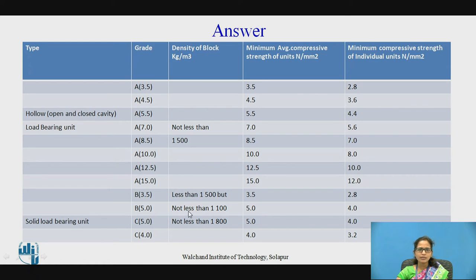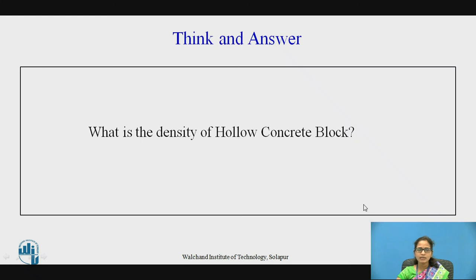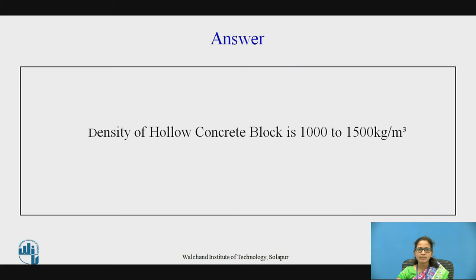Grade B has a block density less than 1500 kg/m³ but not less than 1100 kg/m³. It is manufactured for an average compressive strength of 3.5, 5, and 4 N/mm², and is also used as a load bearing unit. Grade C is the solid load bearing unit, used for load bearing construction, with block density not less than 1800 kg/m³, manufactured for an average compressive strength of 5 and 4 N/mm² at 28 days. The density of the hollow concrete block is 1000 to 1500 kg/m³.